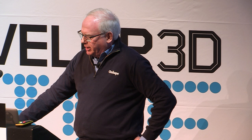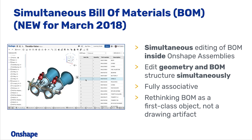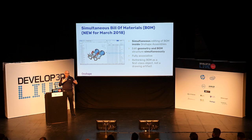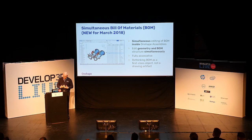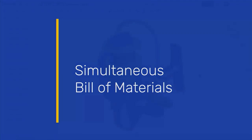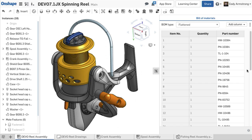The first new thing is something we call simultaneous bill of materials. Bill of materials have been around manufacturing and CAD forever, but not really part of the design environment. Typically your workflow is: you design an assembly, make the assembly, and then the bill of materials shows up on the drawing or in a PDM system. We realize that users like to think about the bill of materials while they're designing, so we put them together so you can edit them simultaneously, fully associatively. We think we've rethought the bill of materials as a first-class object in the system.